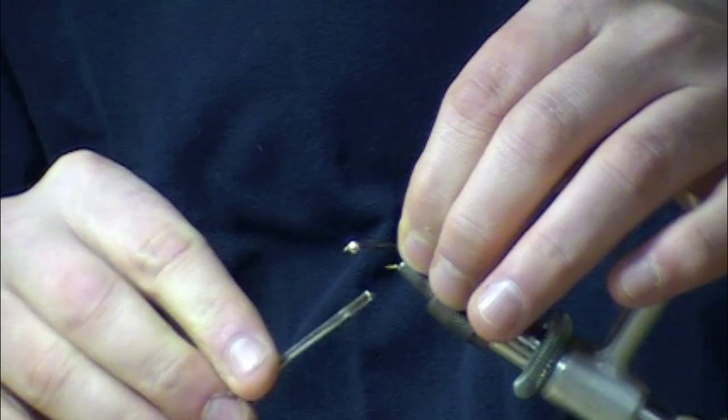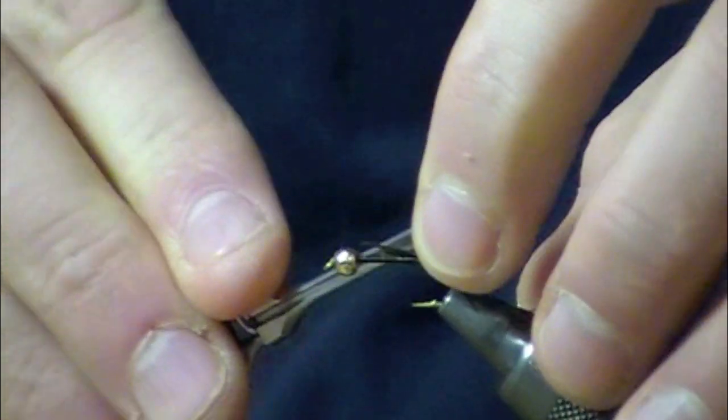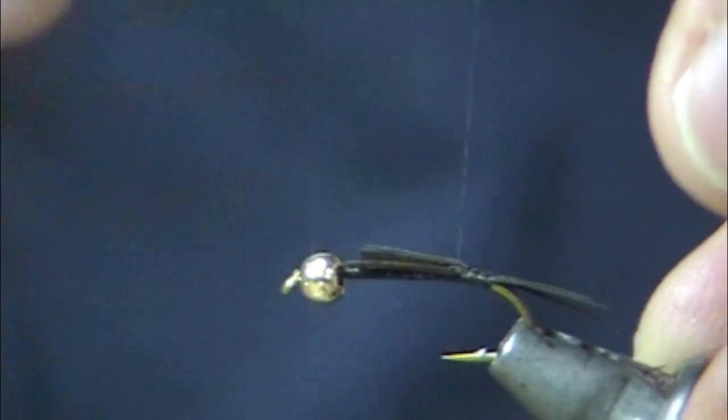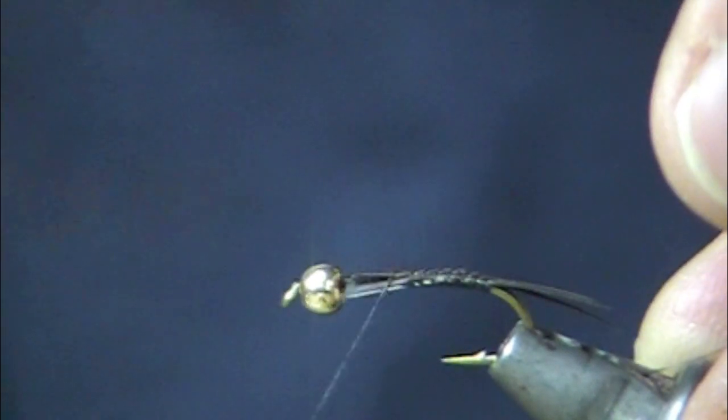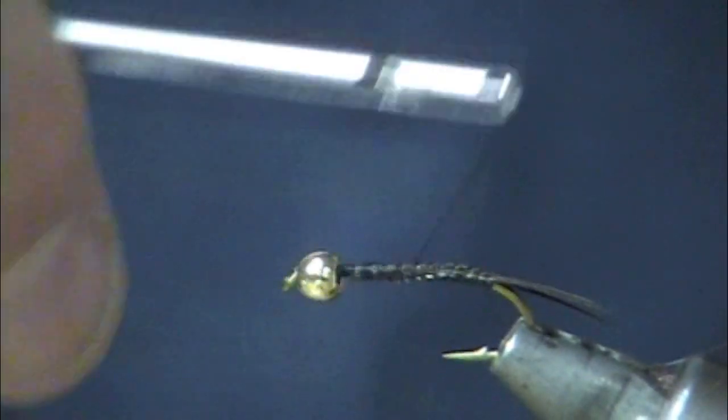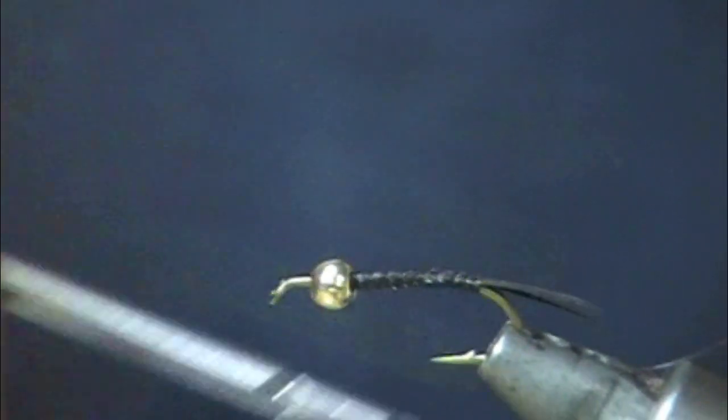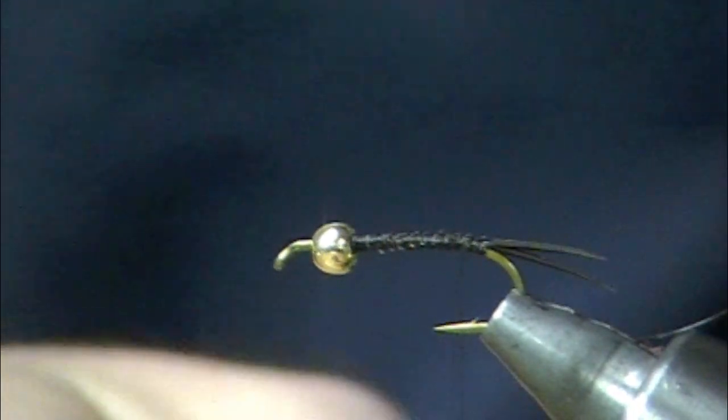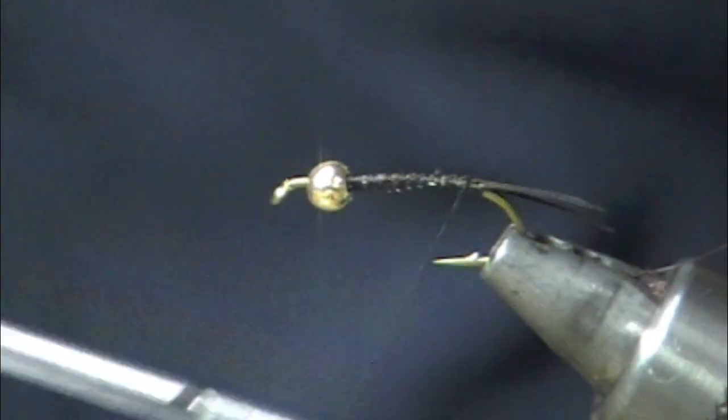Then switch hands, just go ahead and wrap that clear on down the hook shank there. So tighten them both in at the same time rather than one at a time? Oh absolutely, yeah I mean just save yourself a whole bunch of worries.